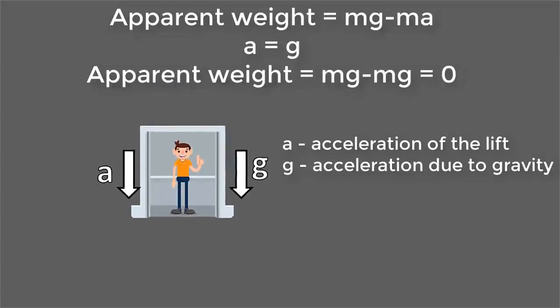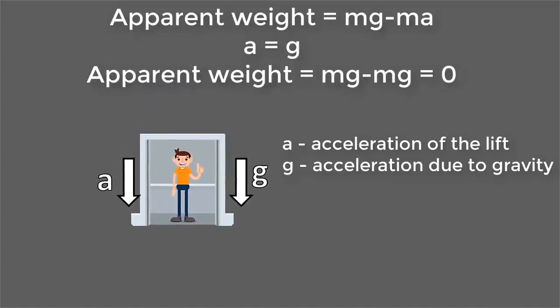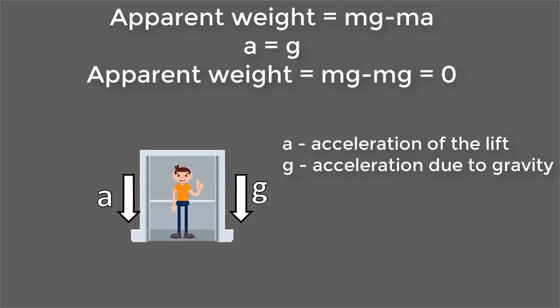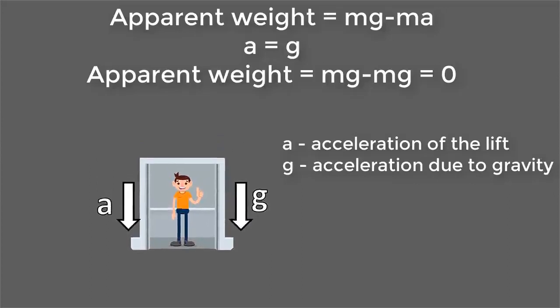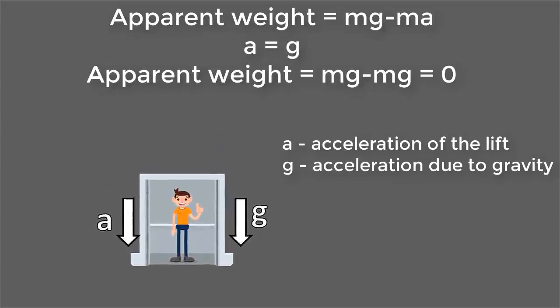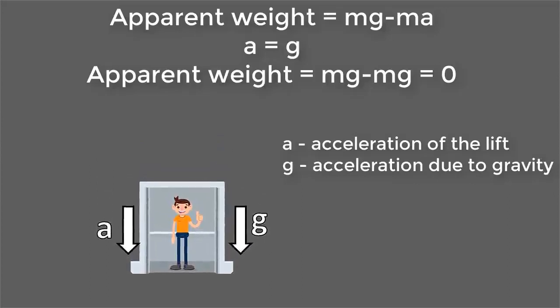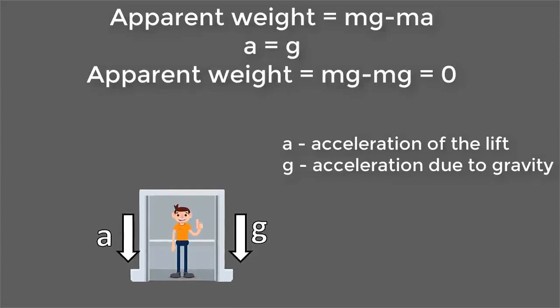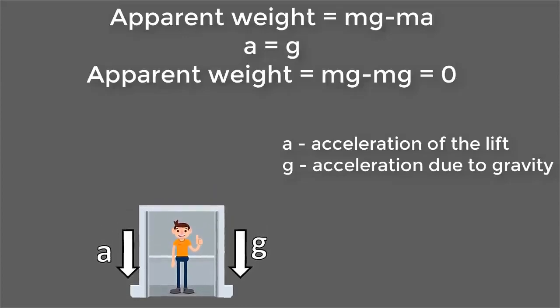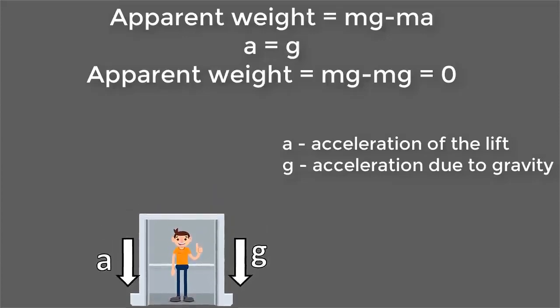So if an object or person accelerates downward with an acceleration equal to 9.8 meters per second squared under gravity, then the object also feels weightlessness.